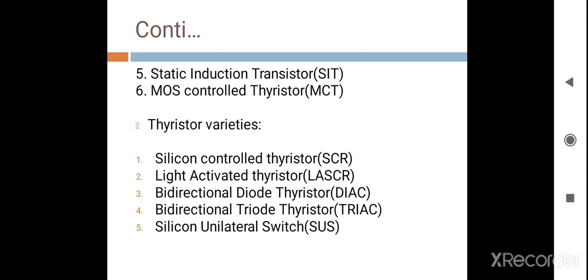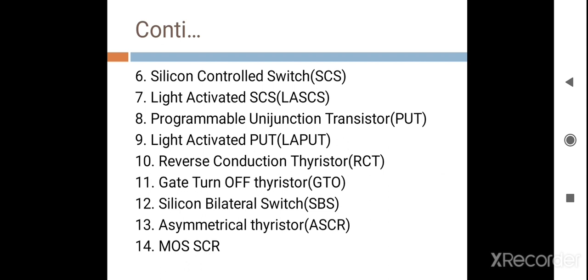In the Thyristor Family, we consider Silicon Controlled Rectifier (SCR), Light Activated Thyristor, Bidirectional Diode Thyristor (DIAC), Bidirectional Triode Thyristor (TRIAC), Silicon Unilateral Switch (SUS), Silicon Control Switch, Light Activated Switch, Programmable Unijunction Transistor, Light Activated PUT, Reverse Conduction Thyristor, Gate Turn-off Thyristor, Silicon Bilateral Switch, Asymmetrical Thyristor, and MOS-SCR. These are the different thyristors considered in the thyristor family.